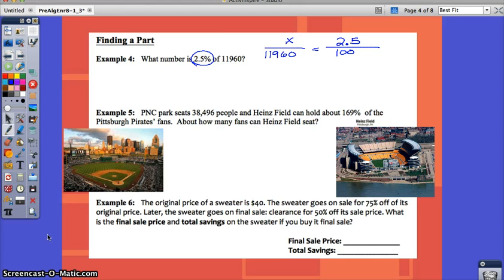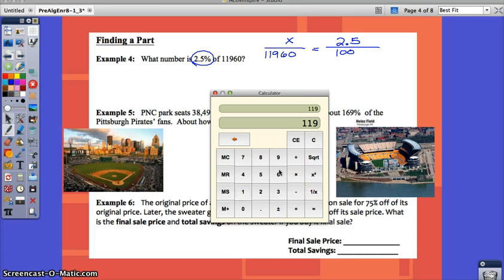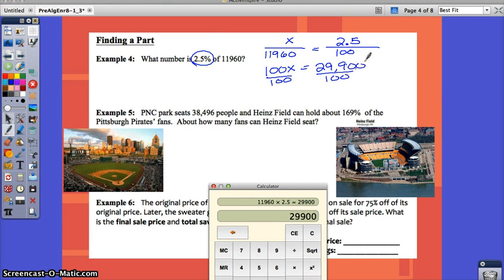Solve this proportion by cross-multiplying. So, 100x equals 29,900. And then when you divide by 100... Remember, dividing by 100, it's just really moving over the decimal, moving the decimal over twice. It's going to get smaller this time. It'll be the same thing as canceling out those zeros. So, x equals 299. There's no percent symbol in your answer here because we weren't solving for the percent.